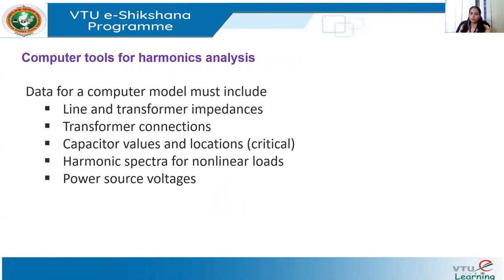To use any computer tools commonly available to study and analyze harmonics, the analyst must describe the system configuration and circuit configuration. They should know the details about the load and the sources. Before doing the computer analysis, we need to collect some data to be inputted into the system. We need line and transformer impedances, transformer connections — whether delta or star — and the values and locations of capacitor banks.